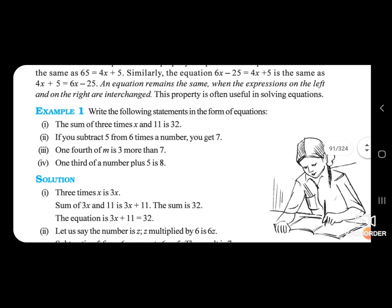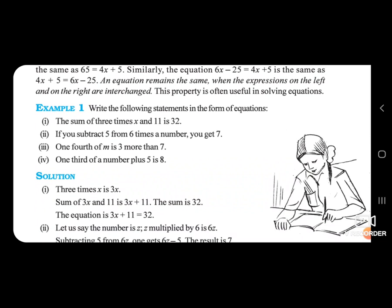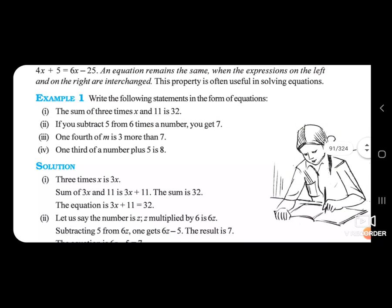Write the following statement in the form of an equation. First: the sum of three times X and 11 is 32. Three times X is 3X. Sum of three times X and 11 is 3X plus 11. The sum is 32. So the equation is 3X plus 11 is equal to 32.